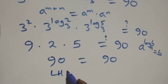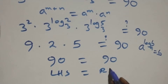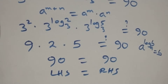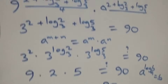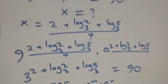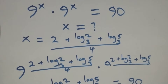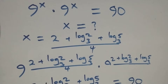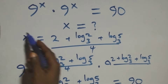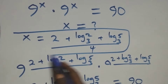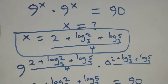Left hand side equals the right hand side. And therefore, we conclude that x equals 2 plus log 2 base 3 plus log 5 base 3, all over 4, satisfies the given problem.